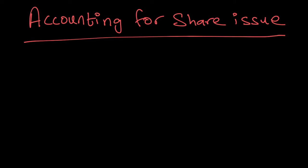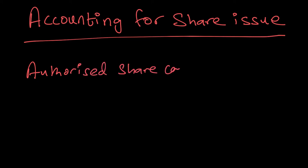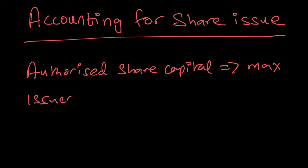Just before that, let me quickly recap. Whenever a company is formed, they would write down their authorized share capital, which is the maximum number of shares they're allowed to raise. Their issued share capital would be the actual amount raised. Our focus will be on issued share capital — that's the actual amount of shares issued and the money that has been raised.